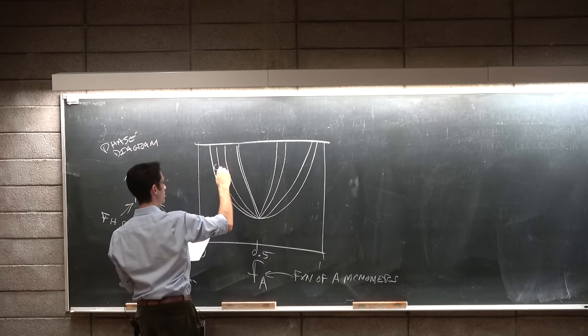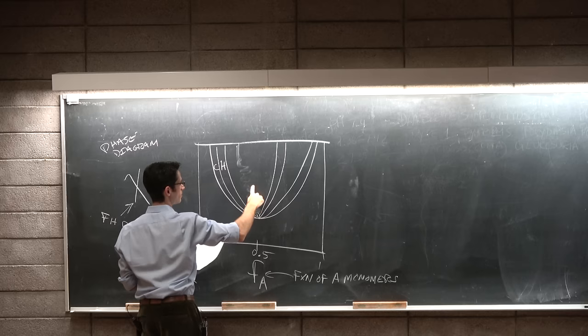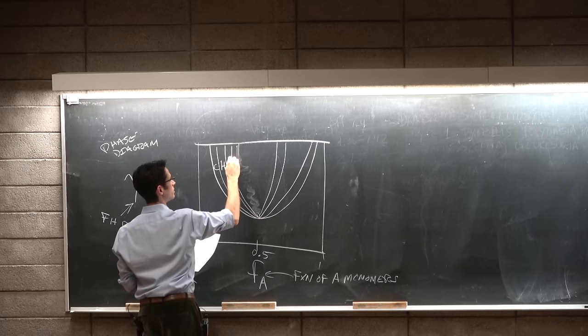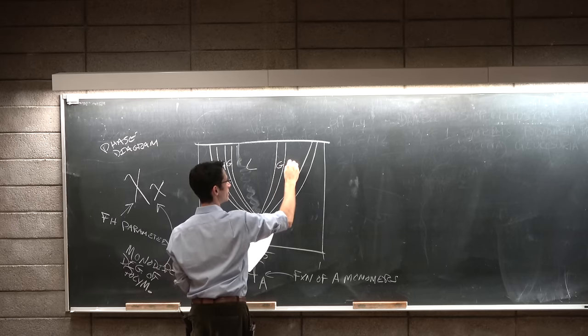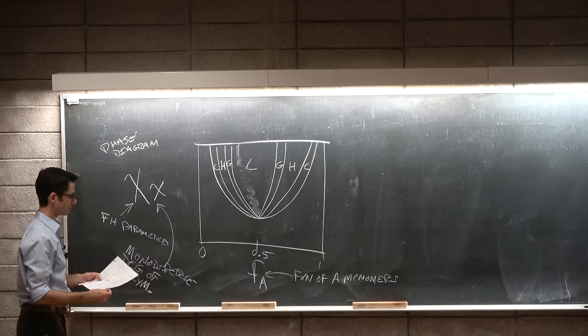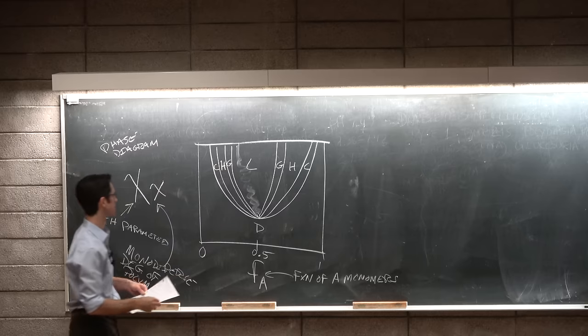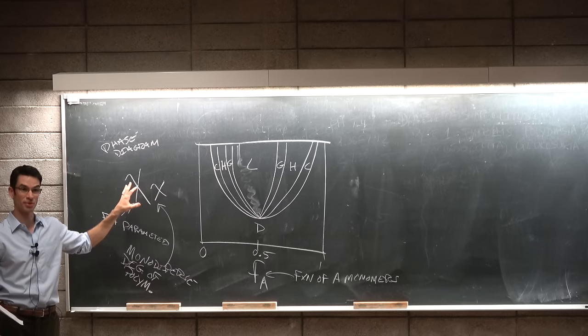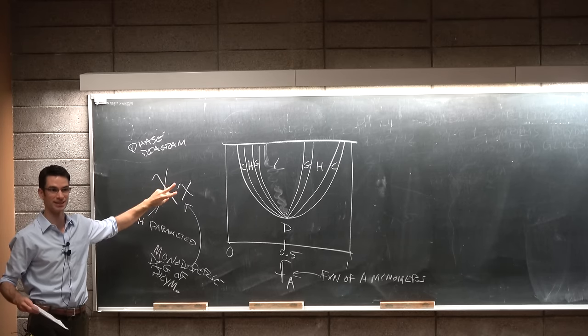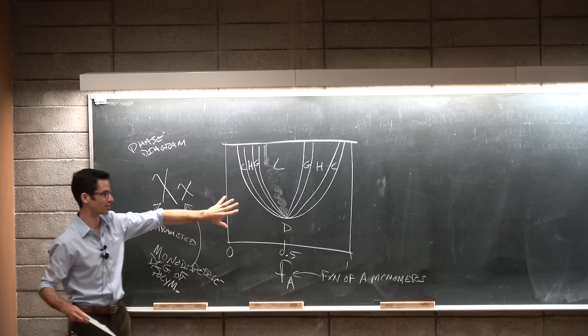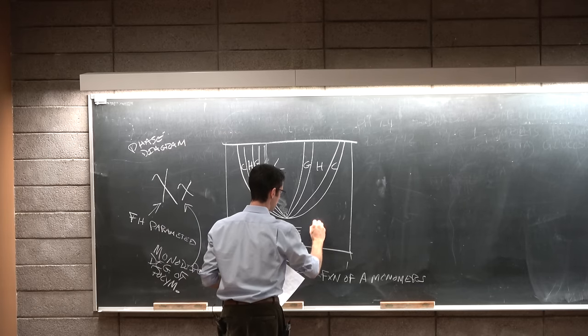And F sub A is the fraction of A monomers. And what we end up with is something that looks like a cloud point diagram. Where we have cubic, hexagonal, and because I don't know how to draw, gyroid lamellar in the center. Then gyroid hexagonal cubic. Where out here at high enough temperatures, remember, because the way these are plotted, don't ask me why, the way that the cloud point diagrams for block copolymers are plotted is almost always in terms of chi, which remember is dependent on the inverse of T, which is why this whole thing is flipped. So at high enough temperatures, we have the homogeneous disordered state.